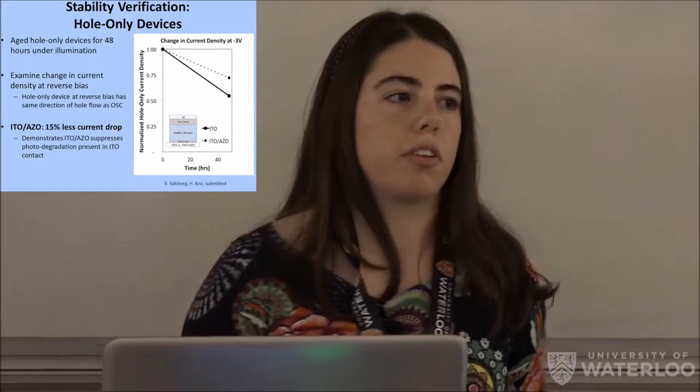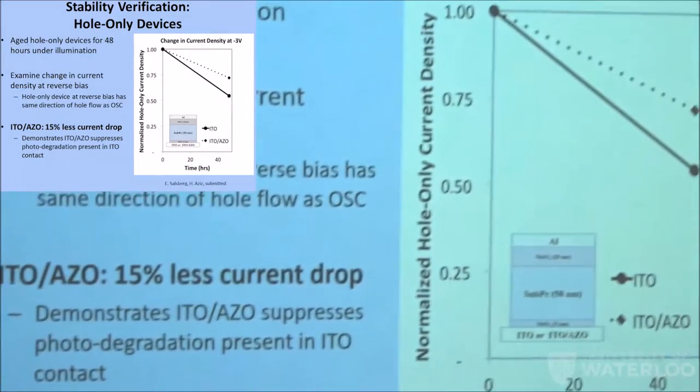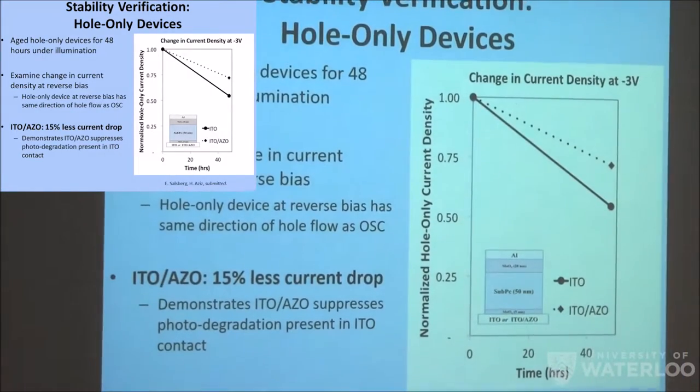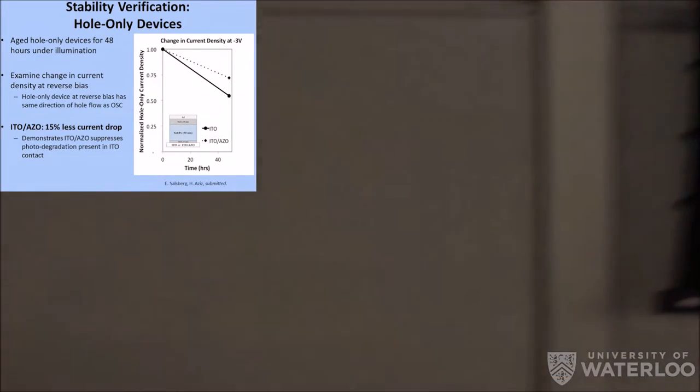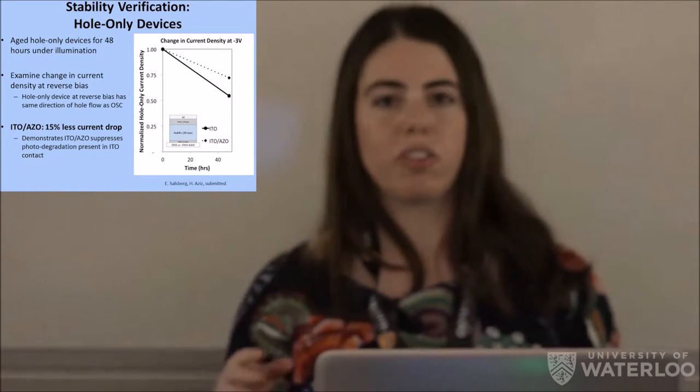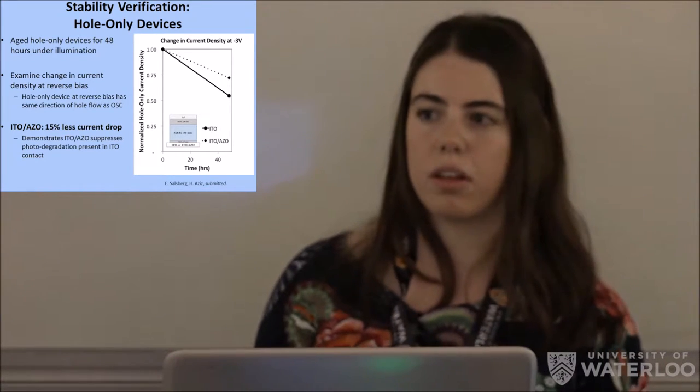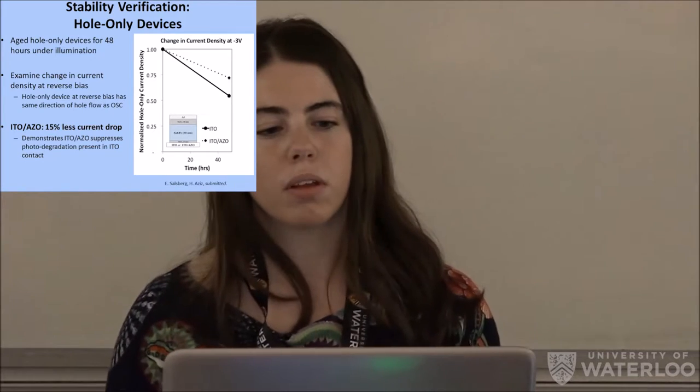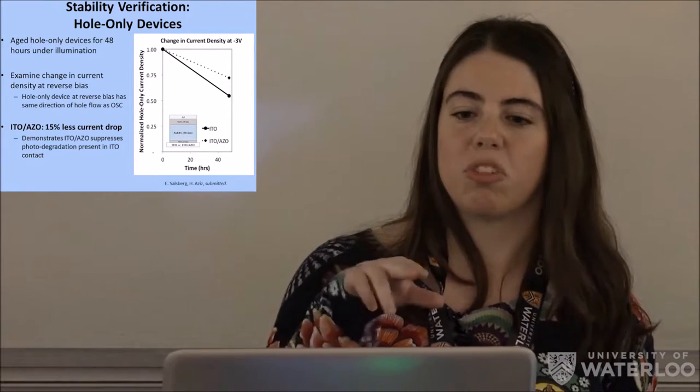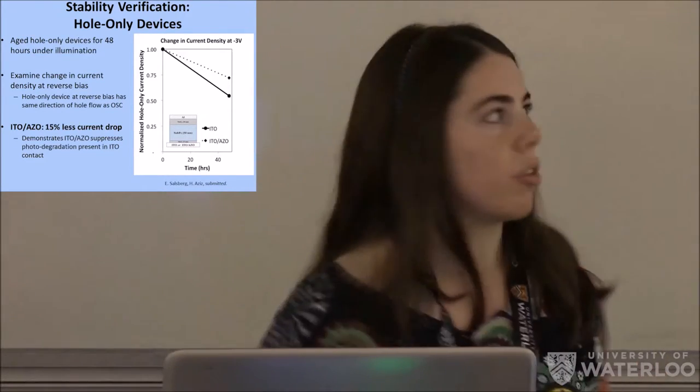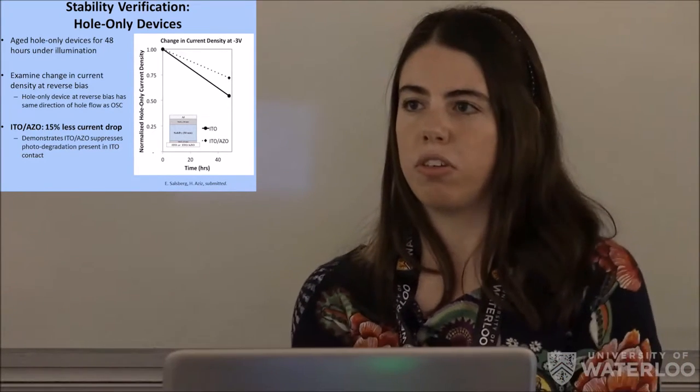So just to verify that the photo stability is indeed improved, we repeated the same aging experiment with hole only devices. And we examined the change in current density at reverse bias. And the reason why reverse bias is because when you reverse bias a hole only device, that's the same hole flow as in an organic solar cell, i.e. the holes are collected at the transparent conductive anode. So as you can see in the graph, the change in current density is substantially less for ITO azo. So there's actually a 15% difference between them. And that suggests that the stability is indeed much improved.